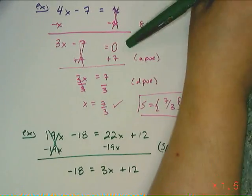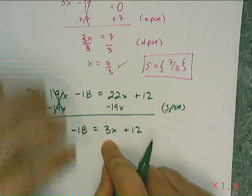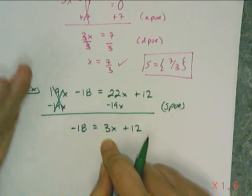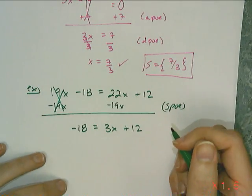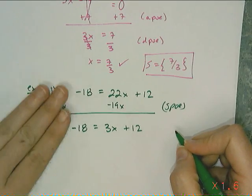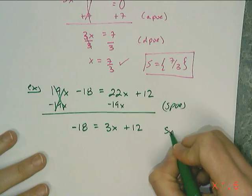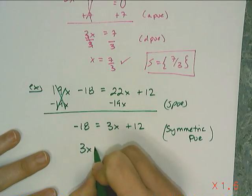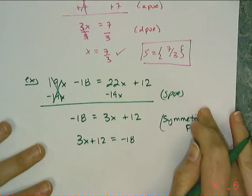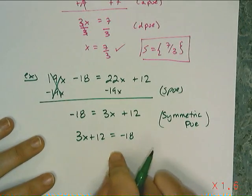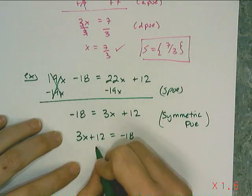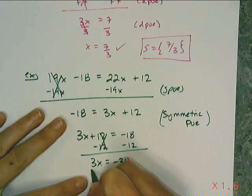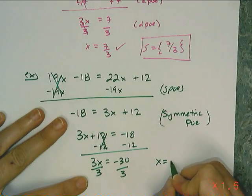So then I have a two-step equation. I personally don't mind the x being on this side, but for those who need the unknown on the left side, you can use the symmetric property of equality and rewrite it as 3x plus 12 equals negative 18. Now I can solve like I normally would — it's just a two-step equation. Subtract 12 from both sides, and I get 3x equals negative 30. Divide both sides by 3, and I get x equals negative 10.